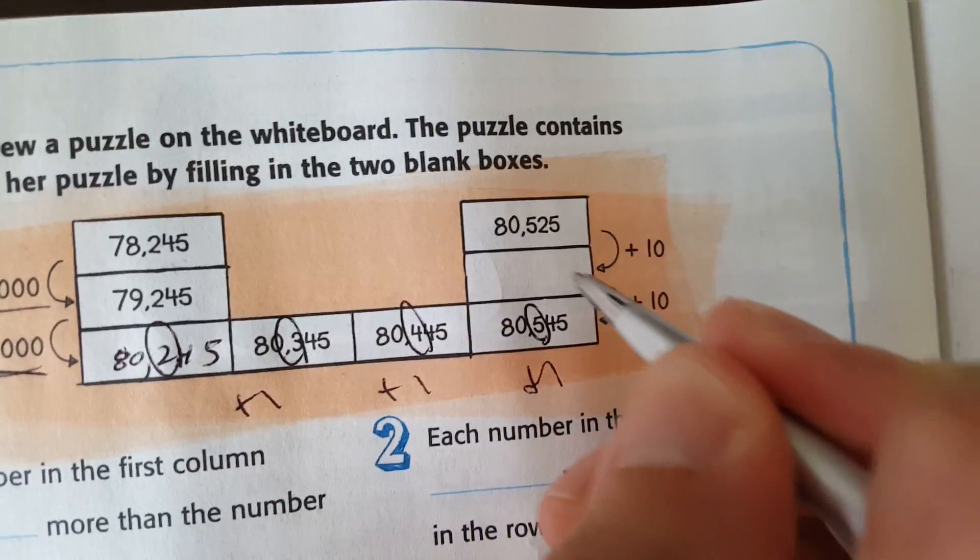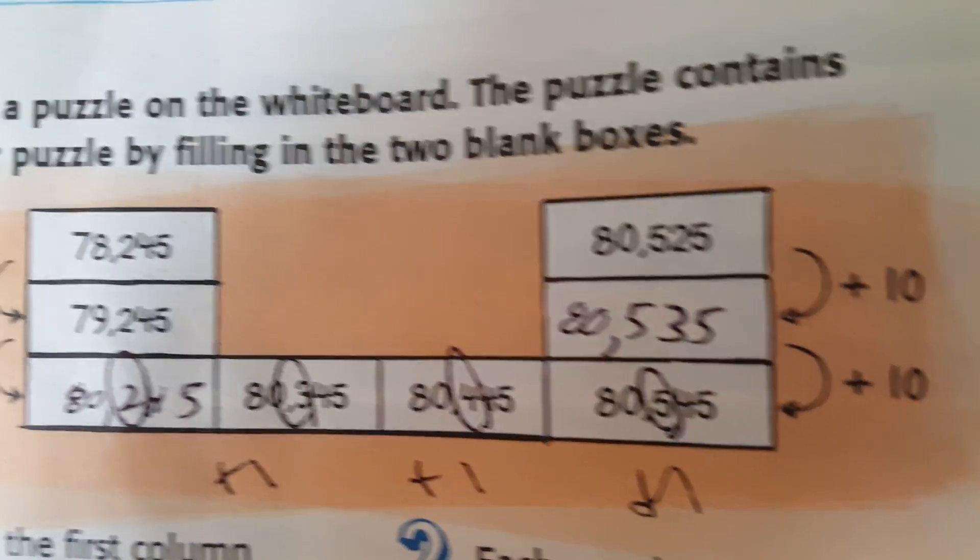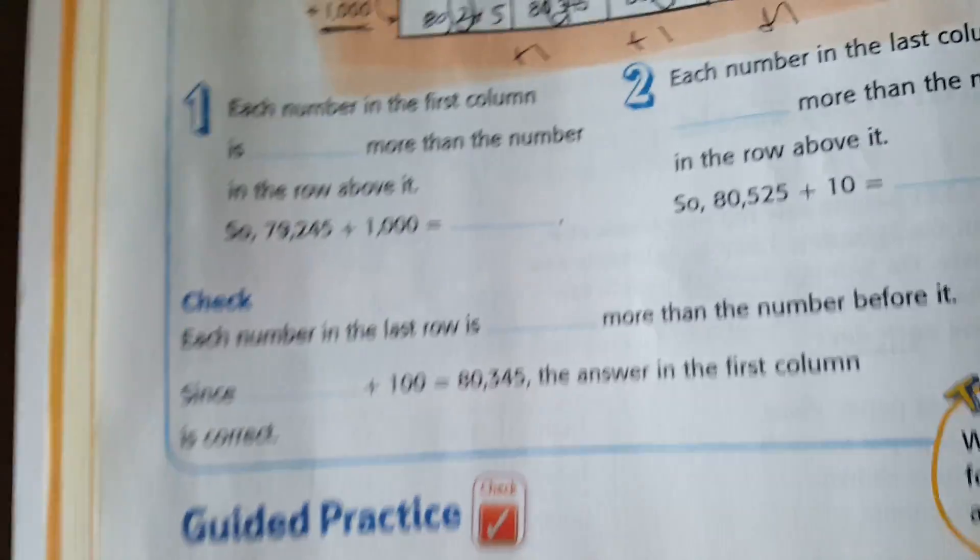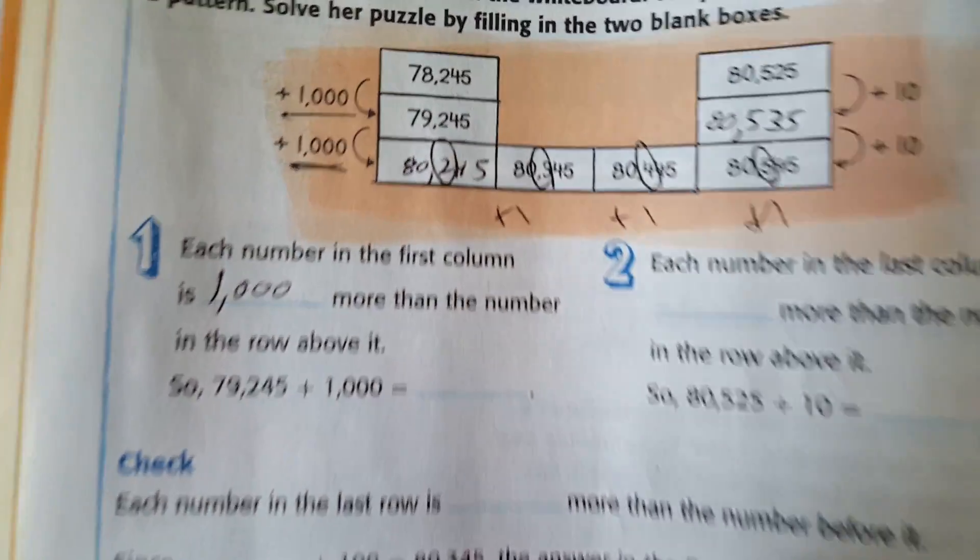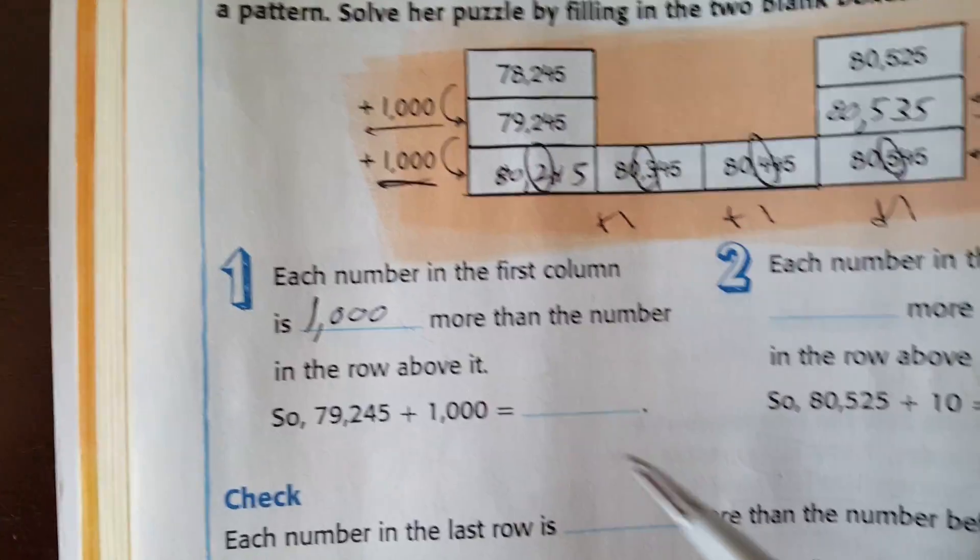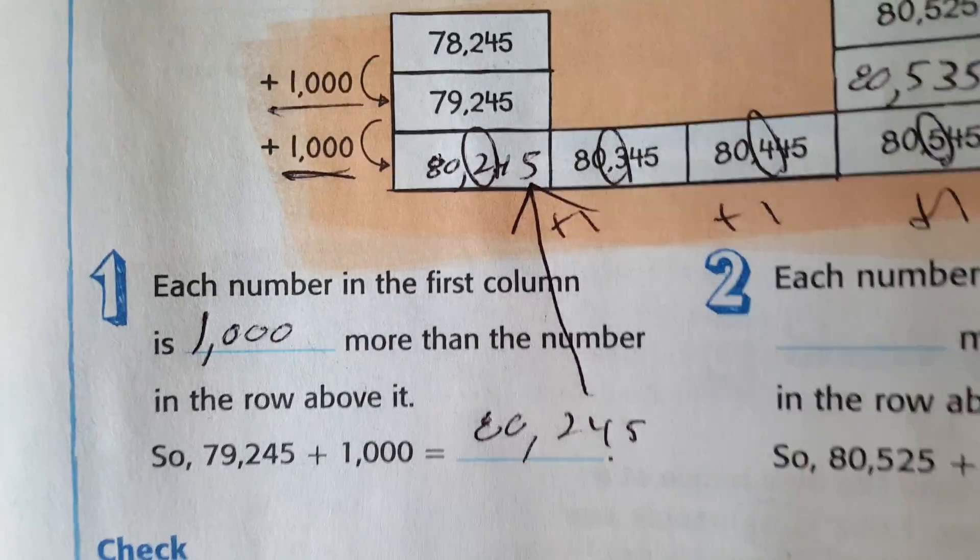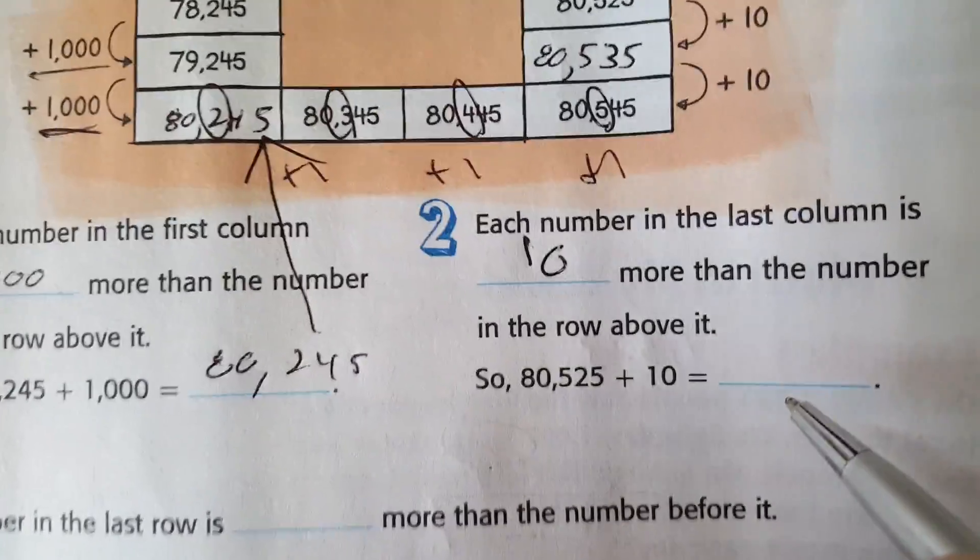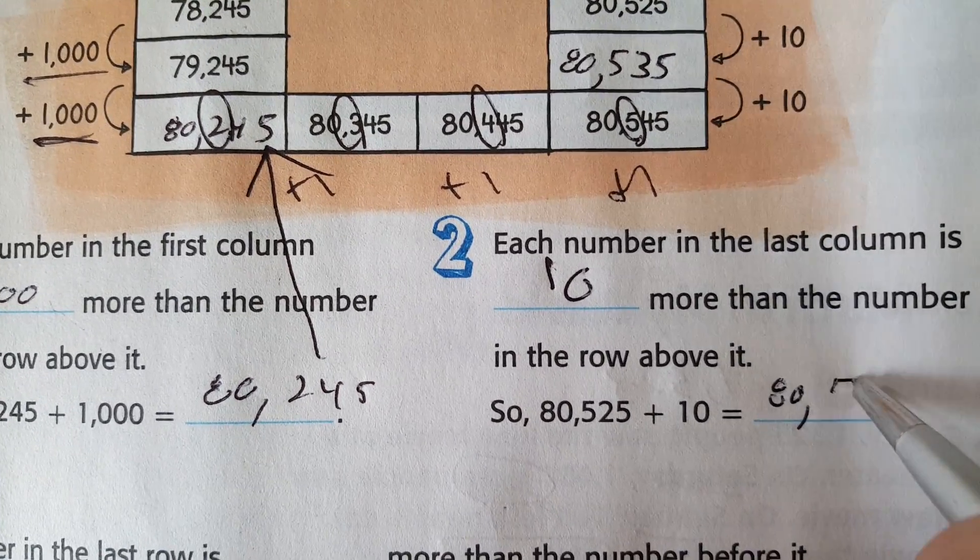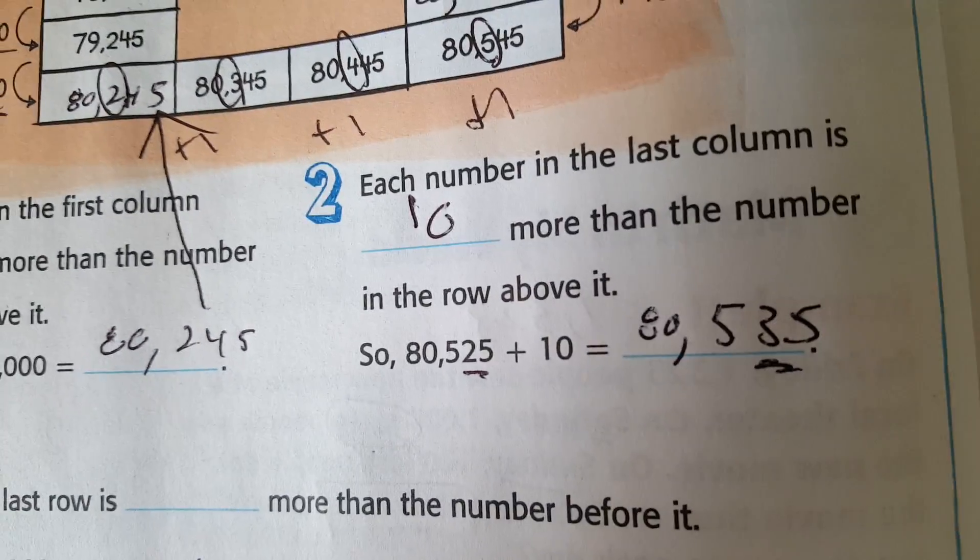Sometimes it's hard to write and hold a phone at the same time. There it is. Down by ten, down by ten. And then it has everything in here. Each number in the first column is 1,000 more than the number in the row above. So we see our answer is 80,245. So it's right there. And then number two, each number in the last column is 10 more than the number in the row above it. So 80,525 is 80,535. You're only changing the tens place. See that? Perfect.